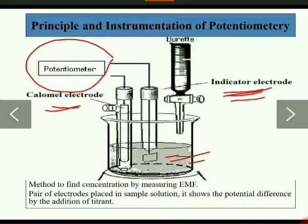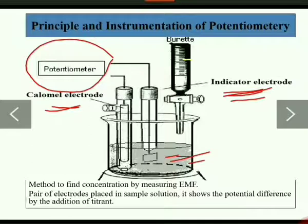The potential of the electrode depends upon the concentration of the ion to which it is reversible. Reversible means the metal should have two stable oxidation states — for example, iron: Fe²⁺ and Fe³⁺.